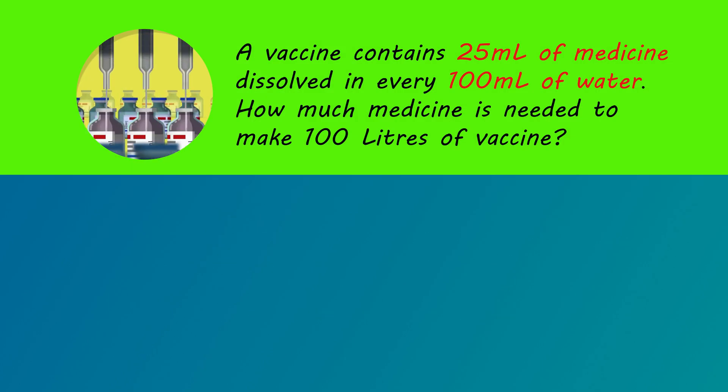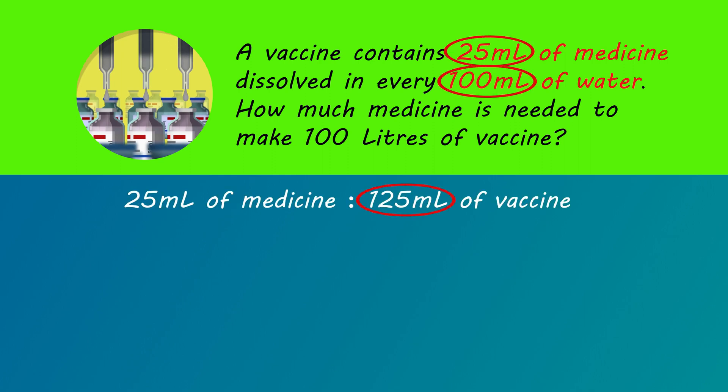A vaccine contains 25 milliliters of actual medicine dissolved in every 100 milliliters of water. How much actual medicine is needed to make 100 liters of vaccine? Careful, the vaccine contains both the medicine and the water. So 25 milliliters of medicine and 100 milliliters of water make 125 milliliters of vaccine.